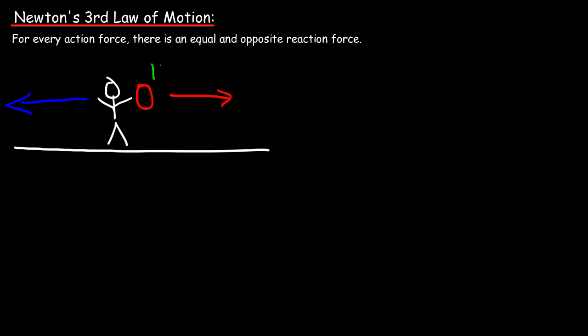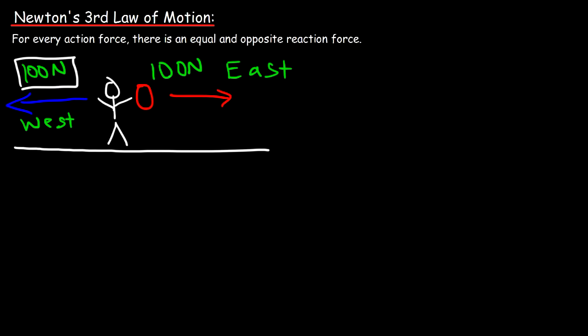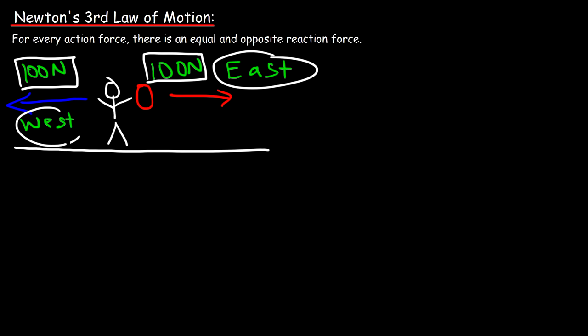If you push the ball with a force of 100 Newtons east, you're going to feel the exact same force but in the opposite direction — that is, going west. The magnitude of the two forces has to be the same; the only difference is the direction, which is always opposite.